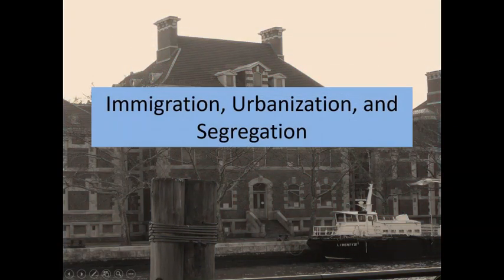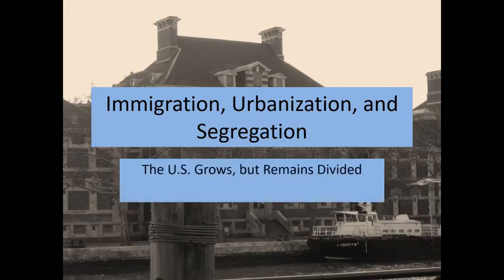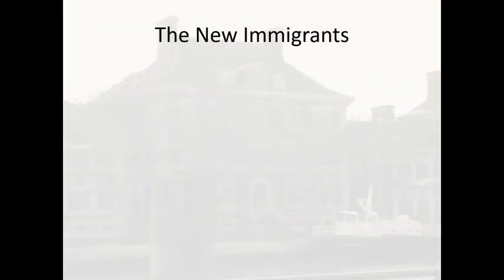Our title for today is 'The U.S. Grows But Remains Divided' — we're talking about immigration and urbanization, but segregation remained. First, we need to talk about the new immigrants. Immigration to the United States has happened in waves, and the time period we're focusing on is the late 1800s and early 1900s. It changes depending on conditions overseas, the people in power, and the laws passed to limit or allow immigration.